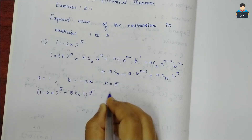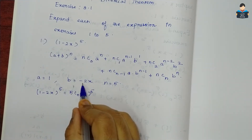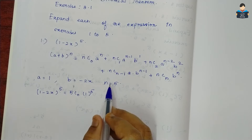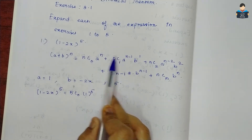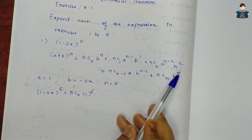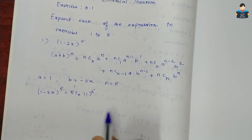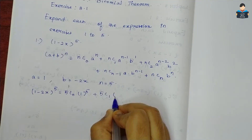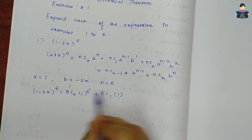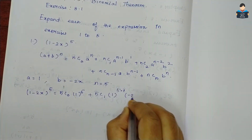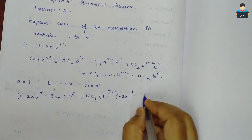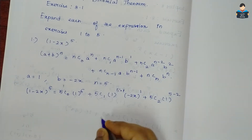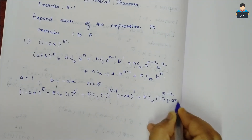So we get: 5C0·1^5 + 5C1·1^(5-1)·(-2x)^1 + 5C2·1^(5-2)·(-2x)^2.